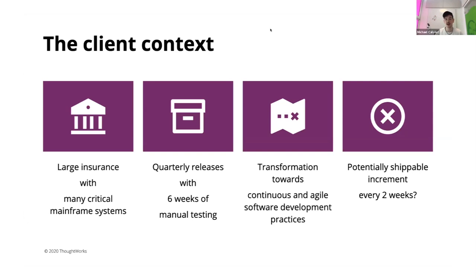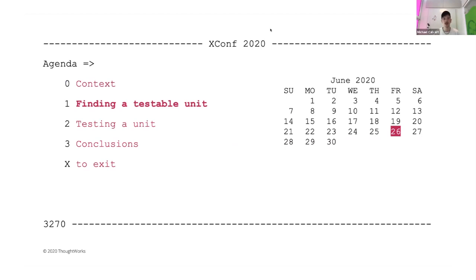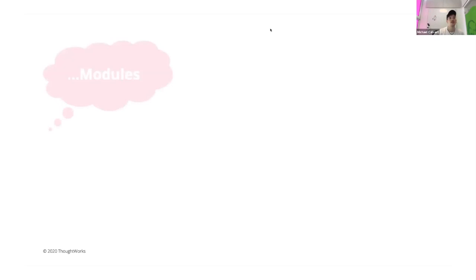With that established and our goal set, we set out to have a conversation with senior engineers at our client, because we didn't have any COBOL experience. We wanted to find a testable unit in a COBOL program. We asked: what is the smallest possible unit we can execute on its own? The answer was modules — modules are COBOL programs, a single file that you can execute.